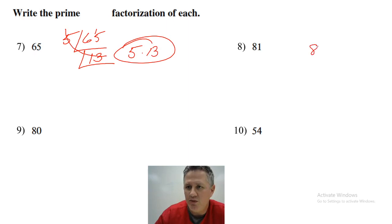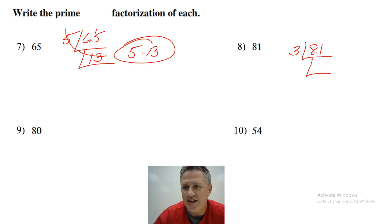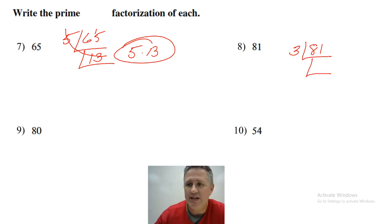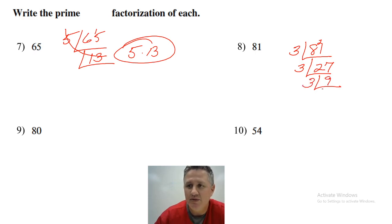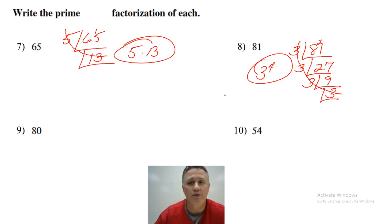Number eight: 81. Two can't go into it because it's odd. I check 3 — three definitely can because 8 + 1 = 9, and the rule is: does 3 go into the digit sum? Yes. Three goes into 81, giving 27. Three goes into 27 nine times. And three goes into 9 three times. So I've got four 3s — my answer is 3 to the fourth power.